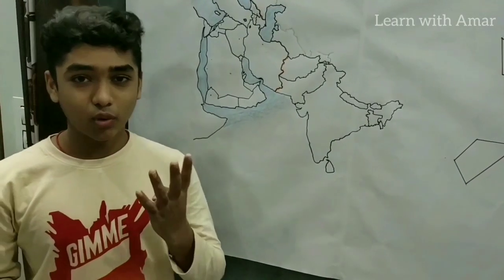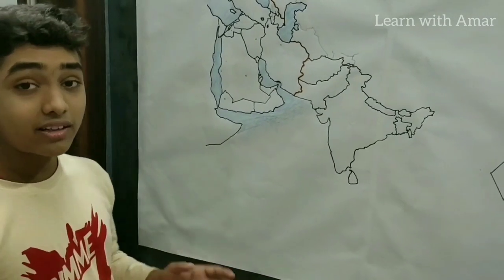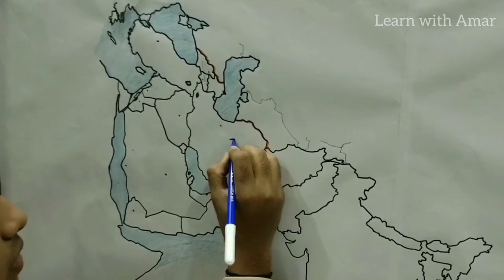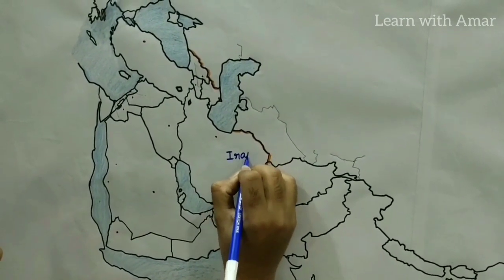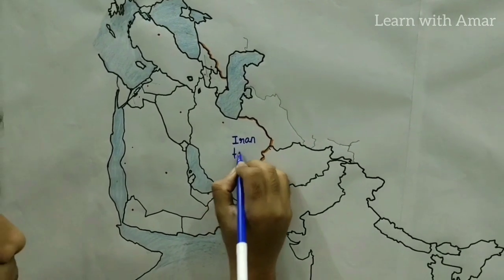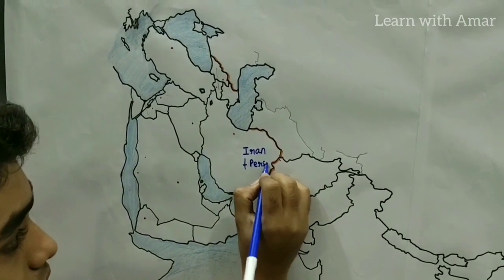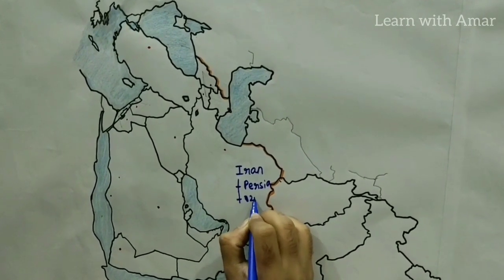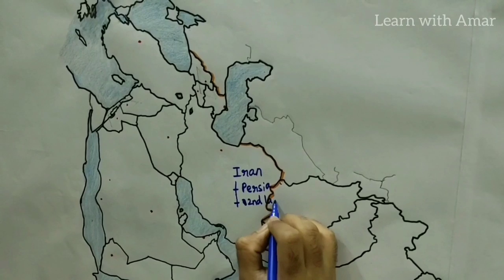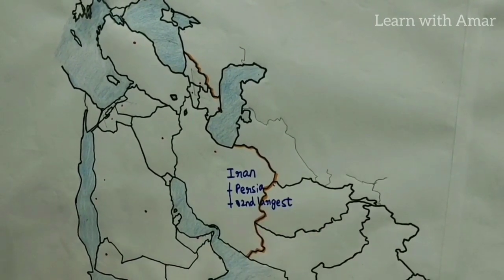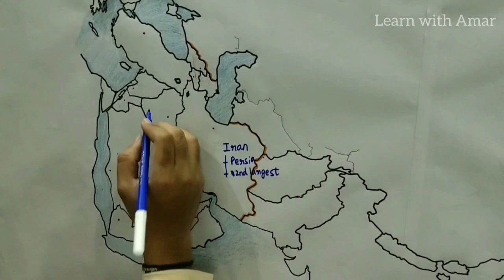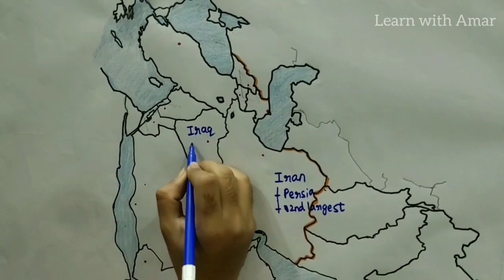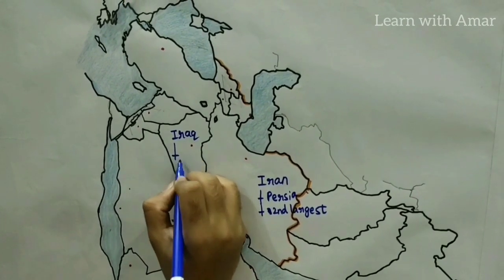We will discuss these countries in four parts. Let us begin with the first part: the large countries. We start with Iran. Iran was previously known as Persia, and Iran is the second largest country in West Asia. Then we find Iraq. Iraq was previously known as Mesopotamia.